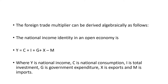The foreign trade multiplier could be derived algebraically. We know the national income identity of an open economy, which is Y = C + I + G + X − M. Where Y is national income, C is consumption, I stands for investment, G stands for government expenditure, X stands for exports and M stands for imports.